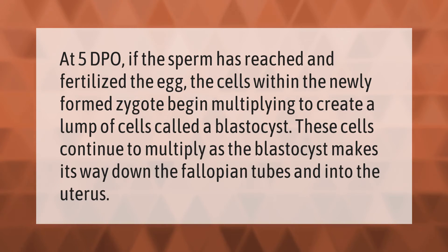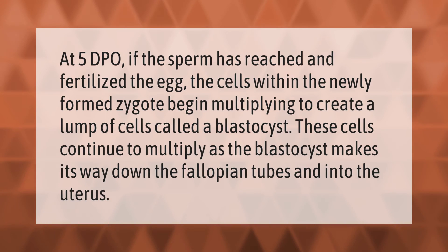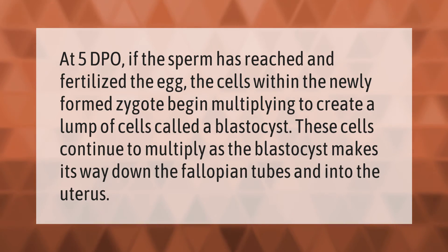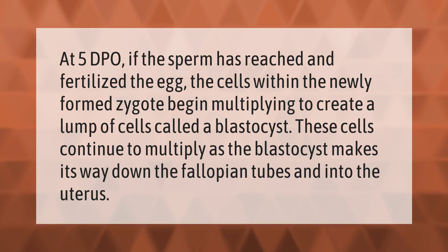At 5 DPO, if the sperm has reached and fertilized the egg, the cells within the newly formed zygote begin multiplying to create a lump of cells called a blastocyst. These cells continue to multiply as the blastocyst makes its way down the fallopian tubes and into the uterus.